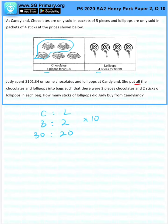So the cost of 30 chocolates is times 6, 1.99 times 6 is $11.94. And then the cost of 20 lollipops is 0.99 times 5 which will give us $4.95.